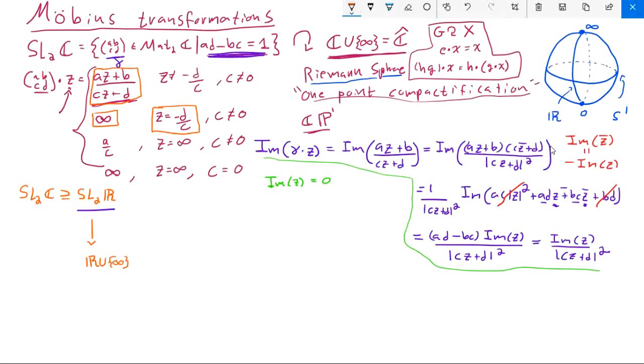So if we think about this on our sphere, what this is saying is that the group SL2R, it will only shuffle points around on this longitudinal line referring to the real numbers plus the point at infinity.